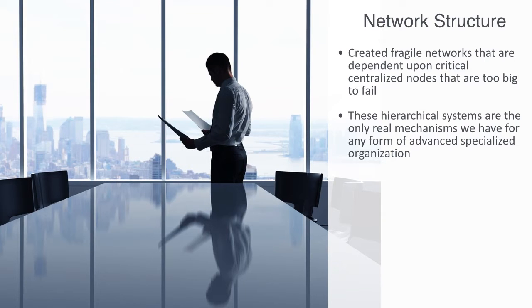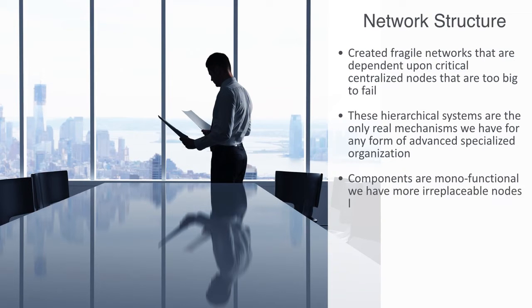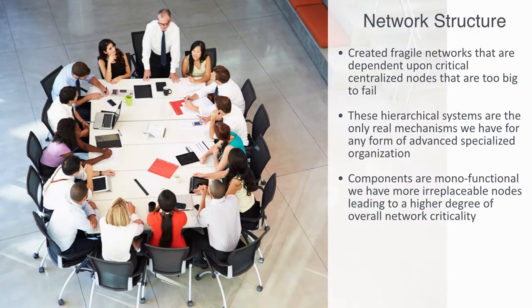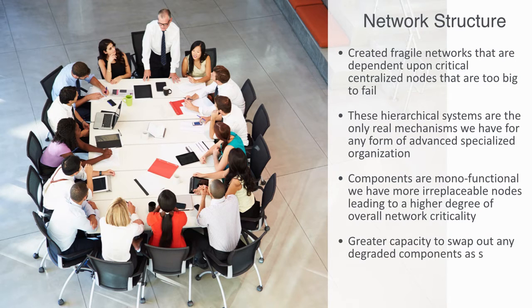As we previously mentioned, the criticality of a node is not just a function of its size, but also how irreplaceable that node is. In more specialized networks where components are monofunctional, meaning we will have more irreplaceable nodes, that will lead to a higher degree of overall network criticality. Distributed networks without centralized coordination mechanisms typically have to maintain themselves. Components are often multifunctional, with a low level of specialization, giving the network a greater capacity to swap out any degraded components.